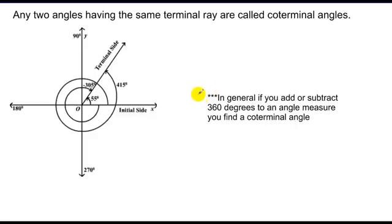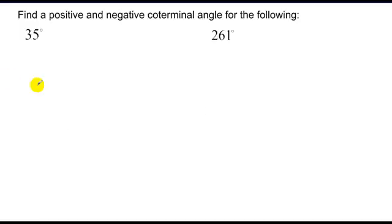So, in general, if you want to find a coterminal angle, you take and add or subtract 360 degrees to an angle measure. So, in this case, I want to find a positive and negative coterminal angle for each of the following.